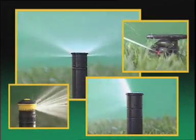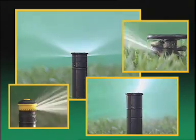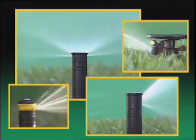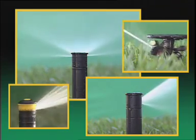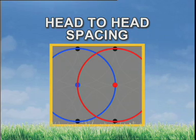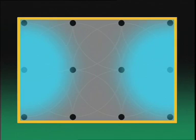Choosing the best sprinkler for a particular application is determined by the plant material and the characteristics of the area to be irrigated. But whatever the choice of sprinkler device, the standard sprinkler head should be positioned so that its spray reaches all the way to the next. This overlapping pattern design is called head-to-head spacing and assures complete water coverage of the area.